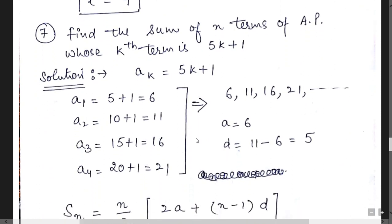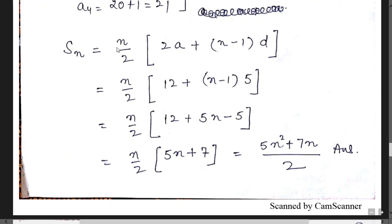In question 7, we must find the sum of n terms of an AP whose kth term is 5k plus 1. Inserting k equals 1 gives 6, then 11, 16, 21 — so the series is 6, 11, 16, 21, with first term 6 and common difference 5. Calculating Sn: n/2 times (2 times 6 plus (n minus 1) times 5) equals n/2 times (12 plus 5n minus 5) equals n/2 times (5n plus 7), giving Sn equals (5n² plus 7n) divided by 2.